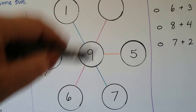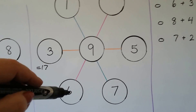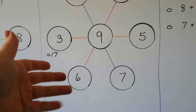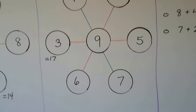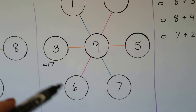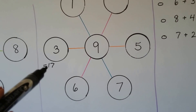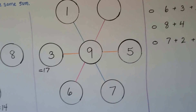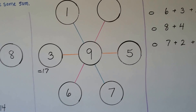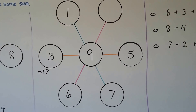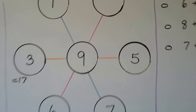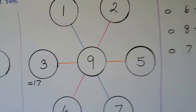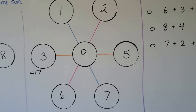Now let's do this one. We'll start with a 9 and count on 6: 9, 10, 11, 12, 13, 14, 15. So 9 plus 6 is 15, but it's supposed to equal 17. What do we need to add to 15 to make 17? If you said 2, you're right — so that would be a 2 here. 2 plus 9 plus 6 is equal to 17.